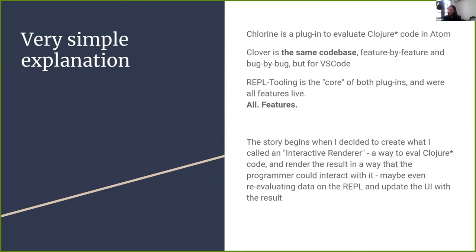Everything that has a socket REPL, I can evaluate into the Atom editor. And Clover is exactly the same plugin, feature by feature and bug by bug, but it's made for VS Code. How I integrate this into these two editors is with the repl-tooling, which is like the core library that has all the features that both plugins have — literally all the features. That's why it's a bug-by-bug thing.